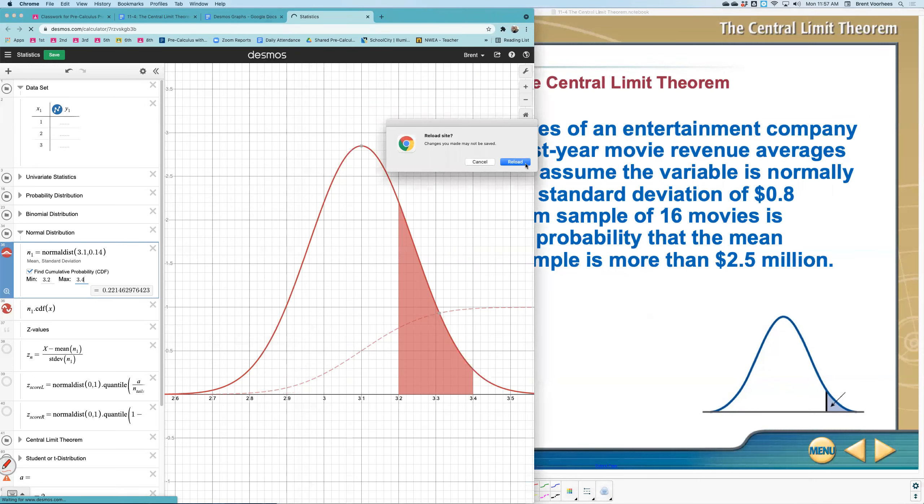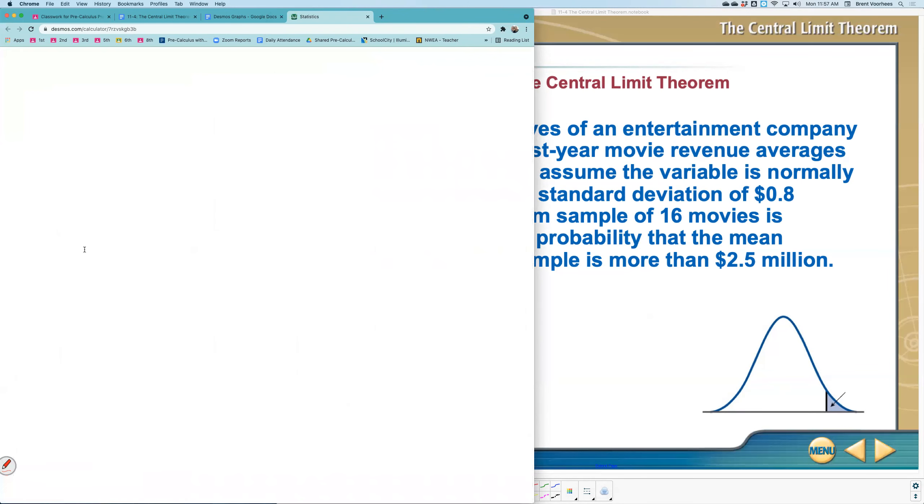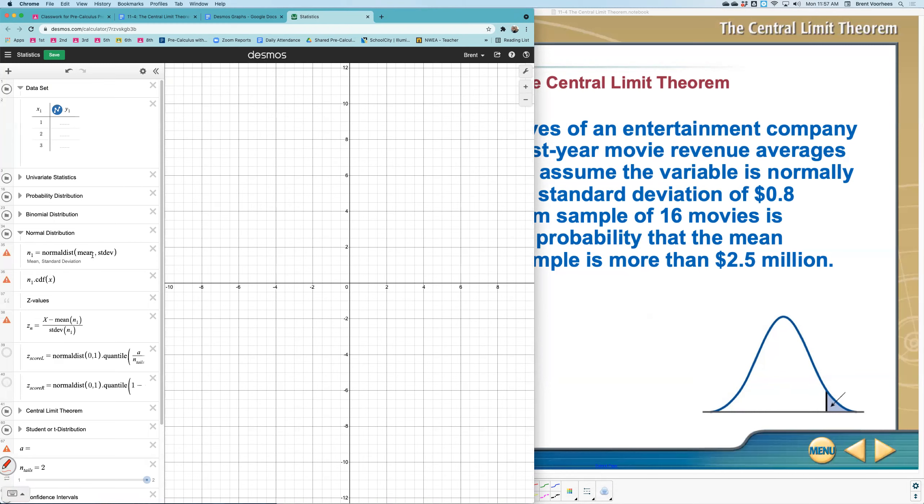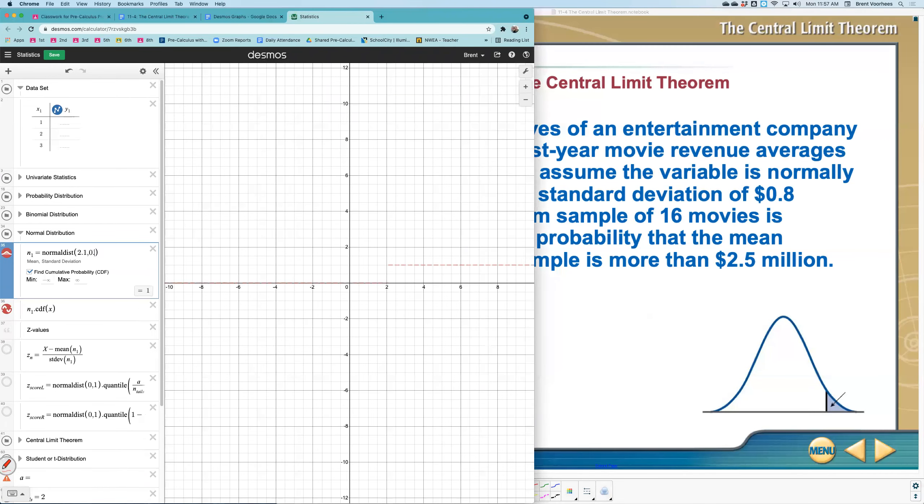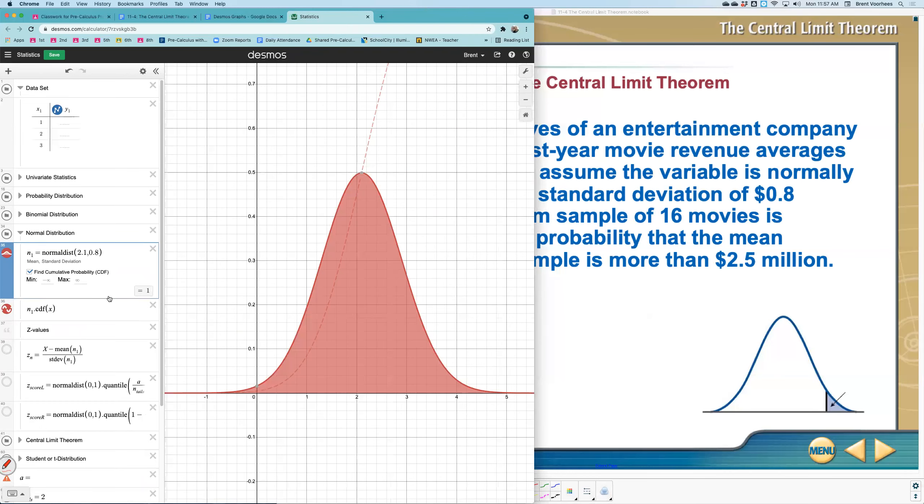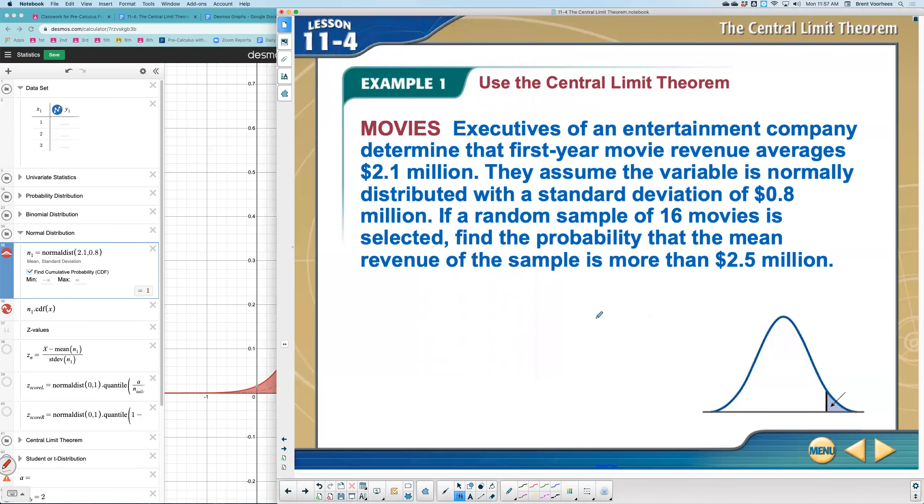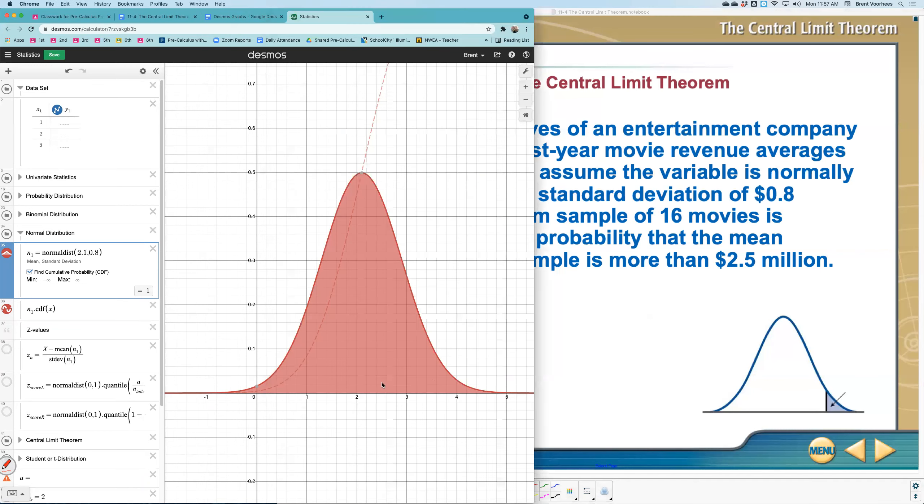We're assuming that the mean is $2.1 million. Let me go back over here. Looking at the normal distribution here, we're assuming that $2.1 million is our mean, and we'd assume it has a standard deviation of $0.8 million. So here's our PDF, our probability distribution function.